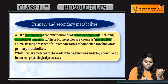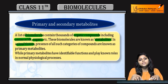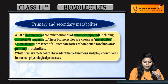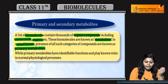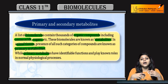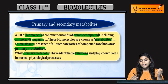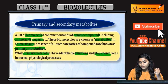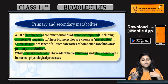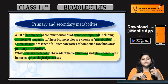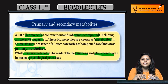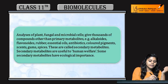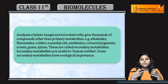In the case of animal tissues, the presence of all such categories of biomolecules are known as primary metabolites. Primary metabolites are identifiable — they have identifiable functions which play a known role in physiological processes, meaning they are involved in proper functioning and normal physiological roles.